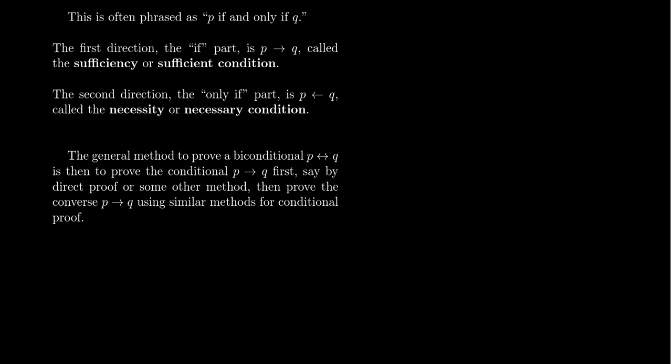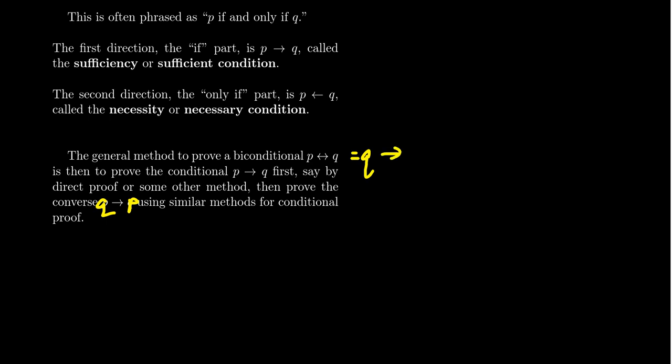So what's the general if-and-only-if proof template? If you want to prove P is equivalent to Q, you first prove P implies Q using direct proof or indirect proof. Then you prove the converse, Q implies P. An if-and-only-if proof always comes in two parts. Necessity typically comes second, but you could do it first — it doesn't really matter. If you prove P equivalent to Q, that's equal to Q equivalent to P. You just need to prove P implies Q and Q implies P.